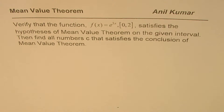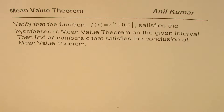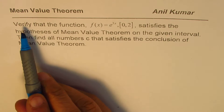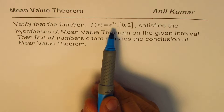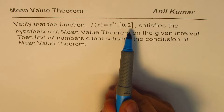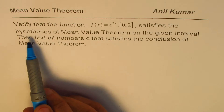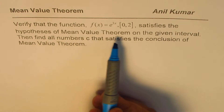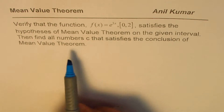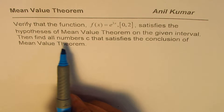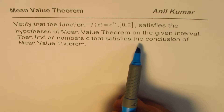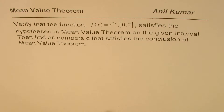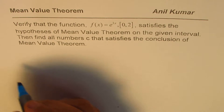I am Anil Kumar and will share an example to verify the mean value theorem. The question is: verify that the function f(x) = e^(3x) in the closed interval [0, 2] satisfies the hypothesis of the mean value theorem on the given interval. Then find all numbers c that satisfy the conclusion of the mean value theorem.